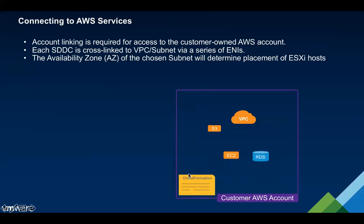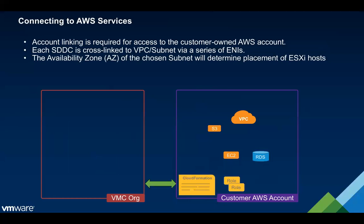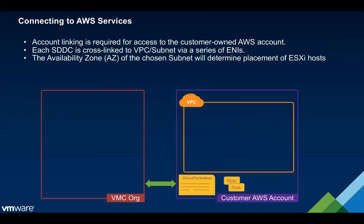Once you click that button, the CloudFormation template executes and creates a couple of roles in your Amazon account that give us permissions to manage the cross-linking. This takes about a minute. Once complete, the VMC org is considered linked to your Amazon account and you can continue. The next step is to choose a region for deploying the SDDC, and the next prerequisite is that you have a VPC for us to cross-link to. In that region, you'll have a VPC with a cross-link subnet created for us.